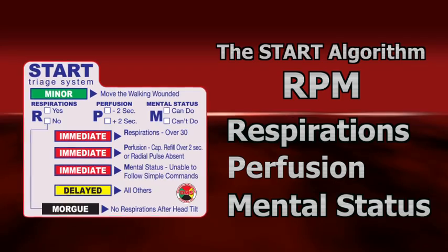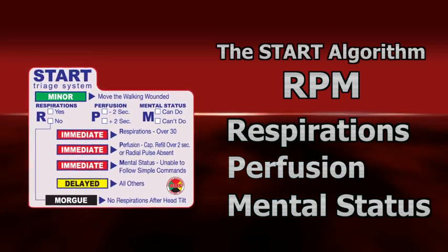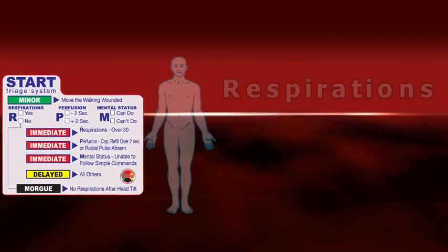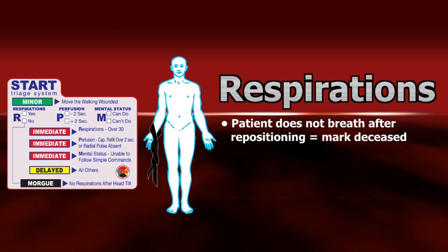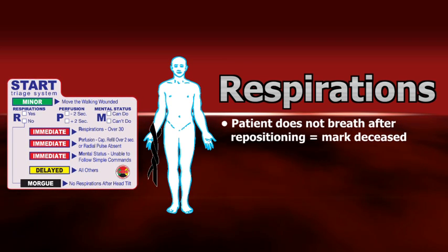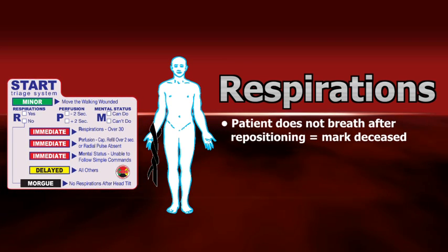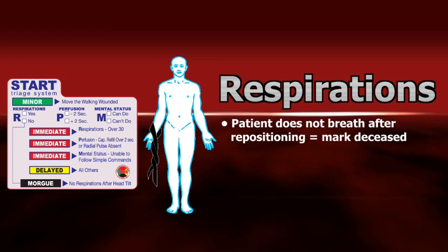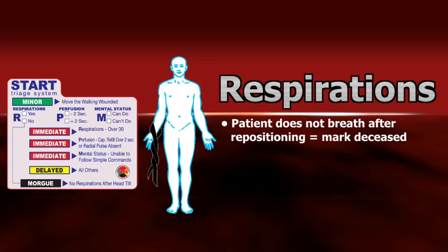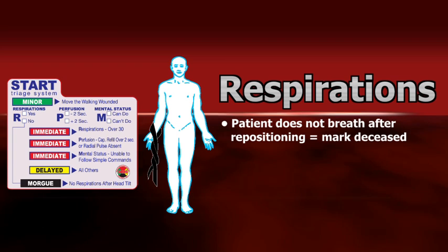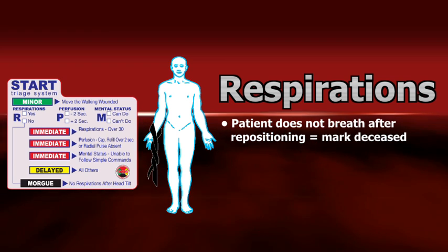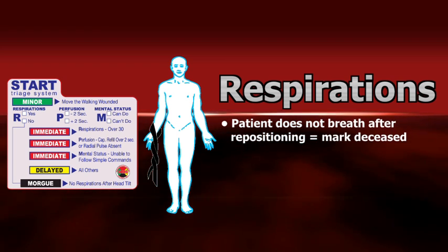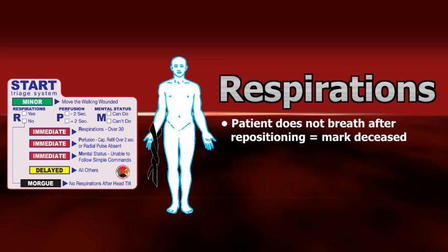Remembering the formula called RPM will guide you through the START triage assessment process. Respirations: if the patient is not breathing and does not begin breathing once the airway has been opened, mark the patient as deceased or black and move to the next patient. Triage team members should not begin CPR on a patient who is not breathing, as CPR will delay the evaluation and care of the remaining patients on scene.